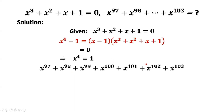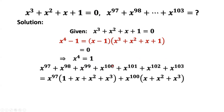This is the given sum. We can split this sum into two groups. The first group contains the first four terms, where x to the power of 97 is the common factor. We can factor it out; the inside part is 1 plus x plus x squared plus x to the power of 3. The second group contains the last three terms, where x to the power of 100 is the common factor. The inside part is x plus x squared plus x to the power of 3.